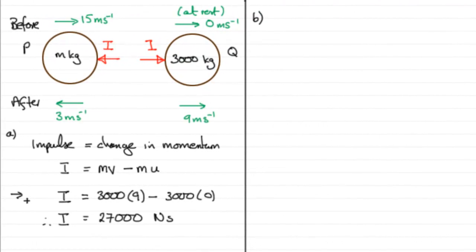Now in part b, we've got to find the mass m of P. And how are we going to do that? Well, we have to do it by the conservation of linear momentum, and hopefully you're familiar with that.